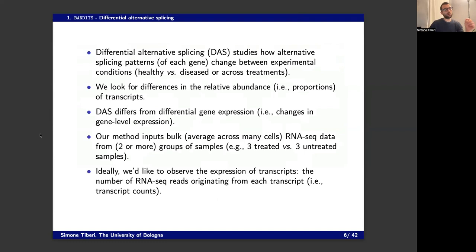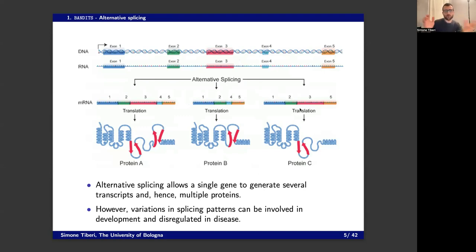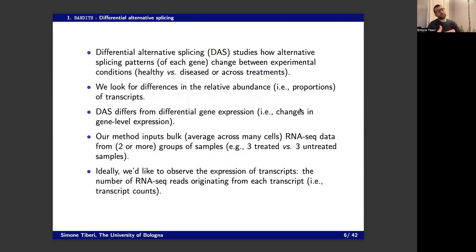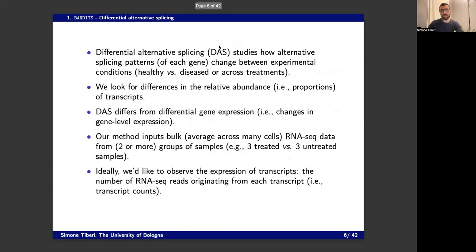What do we look for in particular? We look for differences in the relative abundance of transcripts. For instance, if a gene has three transcripts, we look at proportions like 70%, 20%, 10%, and look for changes in these relative abundances across conditions. One condition could have 70%, 20%, 10%; another could have 50%, 40%, 10%. This is quite different from canonical differential gene expression, where you look at changes at the gene level — overall gene abundance — not the relative abundance of specific isoforms.